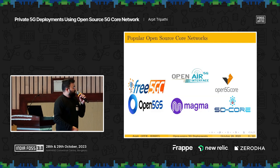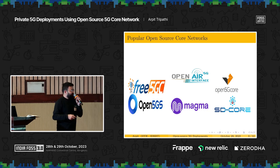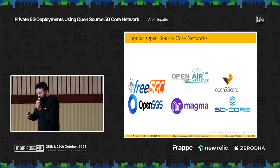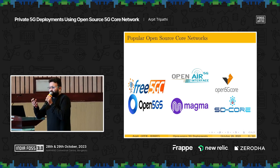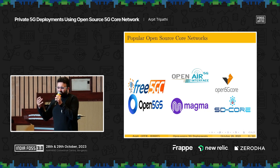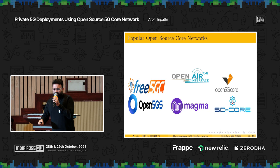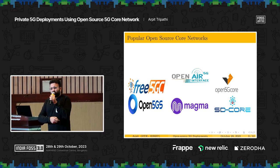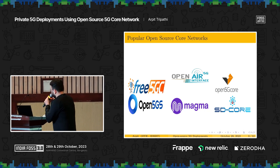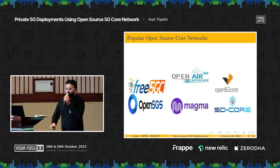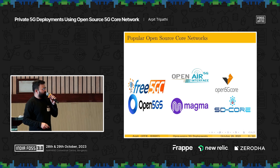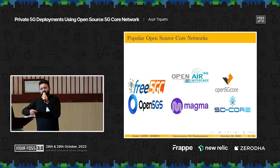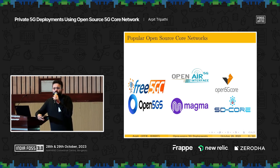Moving on to popular open source core networks: in our lab we have extensively used EURECOM's Open Air Interface 5G (OAI 5G). It supports bare metal, virtual machine, and Dockerized deployments. Another popular one is Free5GC, which provides all network functions separately and also supports slicing. Similarly, there are Open5GS, Magma Core, SD-Core, and other open source core network deployments available for small organizations or academic and research purposes.